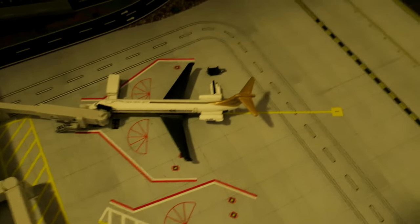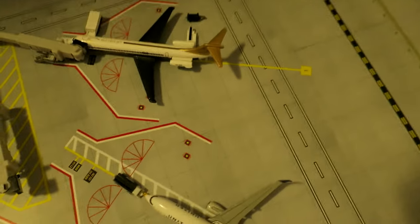Right here we've got Delta MD-80. It had arrived from Washington Reagan and will depart to Washington Reagan.